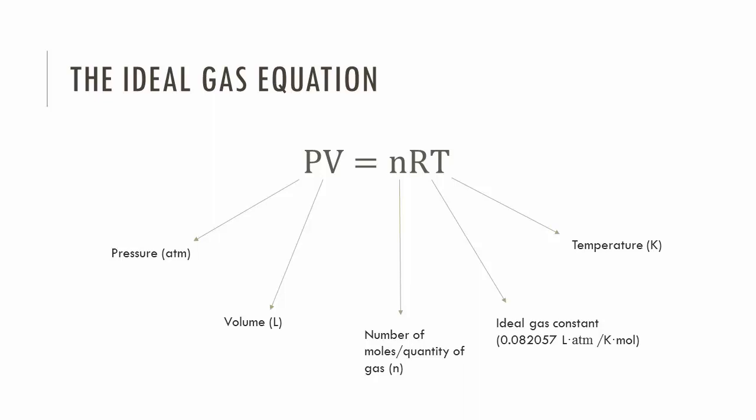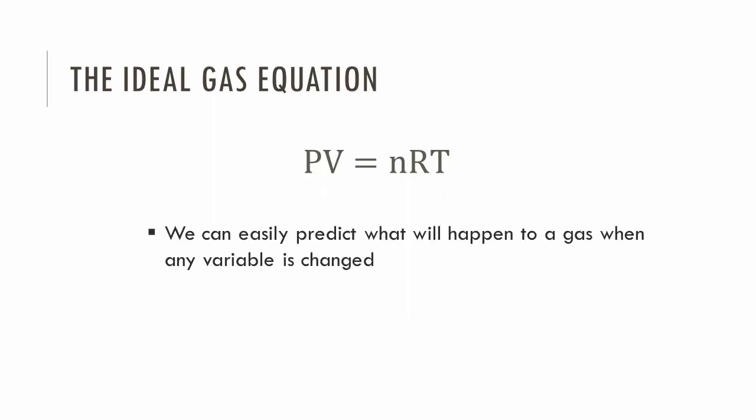When we know the ideal gas equation, it's very easy to predict what will happen to a gas under different conditions. You just need to know how to manipulate the formula. Even without precise data given to us, we can know if the pressure of a gas triples, if the volume is increased or decreased, if the temperature changes, etc.